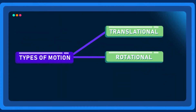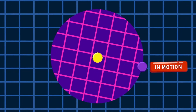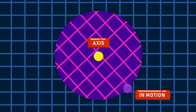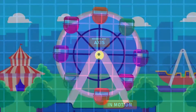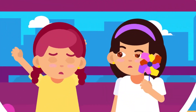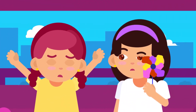Rotational motion: the type of motion in which a body rotates around a fixed point or axis is called rotational motion. For example, the motion of the Ferris wheel, or the motion of a wind vane when the wind strikes it.